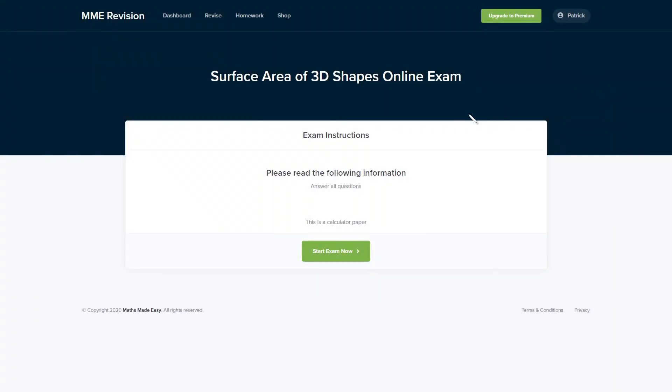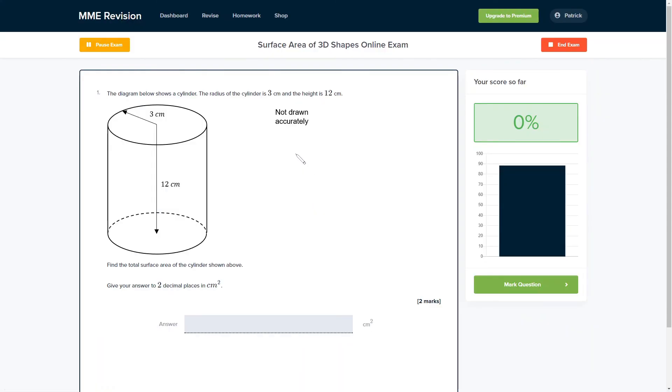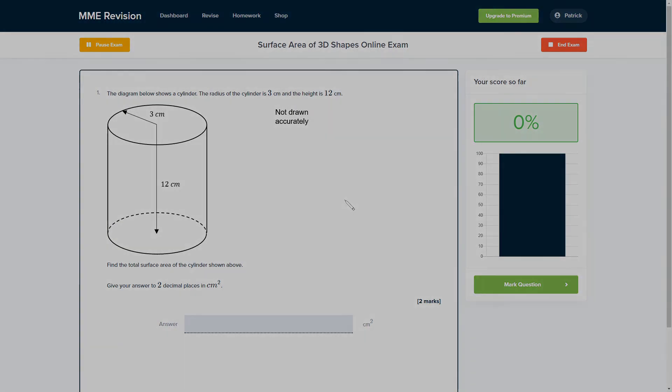So if you want to practice this topic or see some exam style questions on the surface area of 3D shapes, why not have a go at our online exam? You can get there through our revision platform. You'll find loads of different questions, a variety of different question types, and you get instant feedback on each and every one of them. So it's really useful if you want to keep track of the areas that you need to improve. So if you're interested, then click the link below and it will take you straight there.